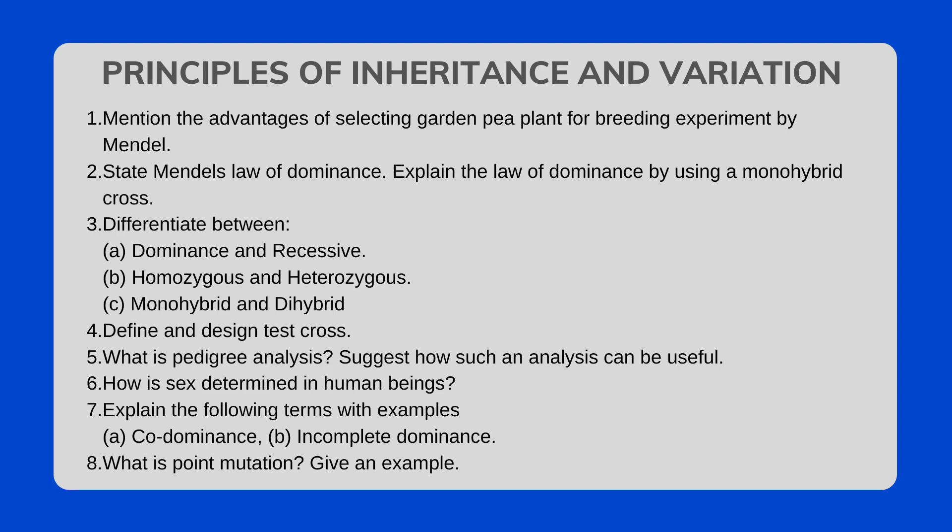Principles of Inheritance and Variation: Mention the advantages of selecting the garden pea plant for breeding experiments by Mendel. Why did Mendel select the garden pea plant? State Mendel's law of dominance and explain it using a monohybrid cross. Differentiate between dominance and recessive, homozygous and heterozygous, and monohybrid and dihybrid.